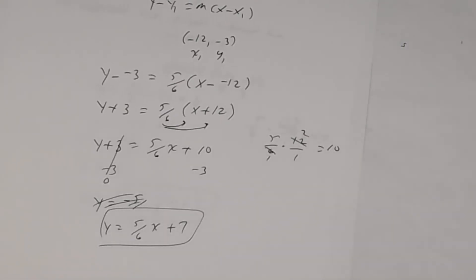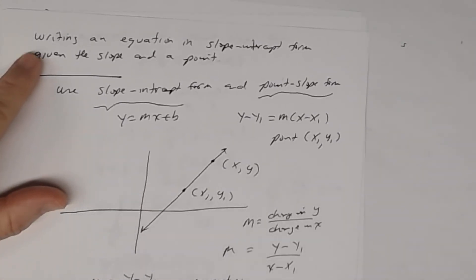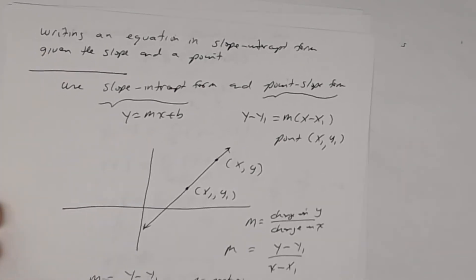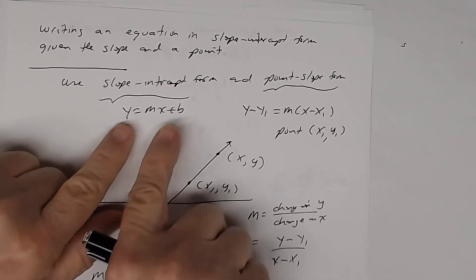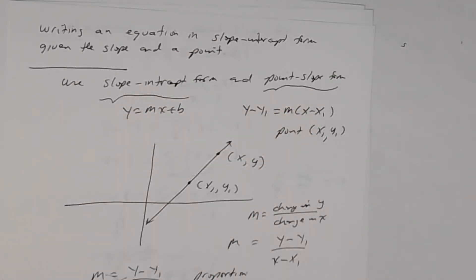That's the end of the topic of writing an equation in slope-intercept form given the slope and a point. There are two approaches: using slope-intercept form and using point-slope form. You have to know both approaches.